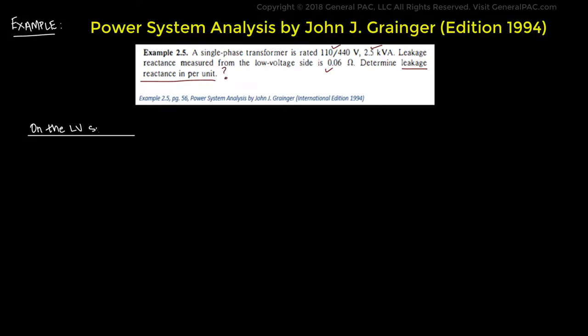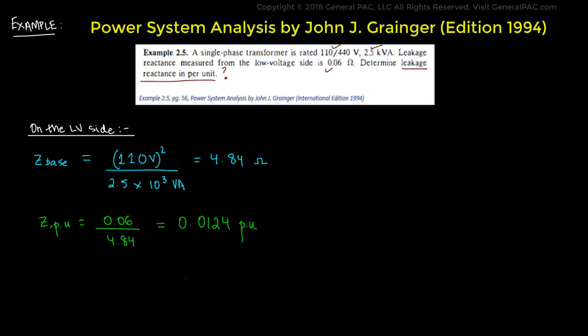Now, the solution on the low voltage side is this. We have Z,base which equals 110 volts squared divided by 2.5 times 10 to the third VA, which is voltage squared over power. We get 4.84 ohms. Now, the per unit Z,PU equals 0.06 divided by 4.84 base, and that equals 0.0124 per unit in terms of the leakage reactance. By doing so, these two step calculations we know that Z,PU on both sides, i.e. the low voltage side and the high voltage side, is equal to 0.0124 PU.